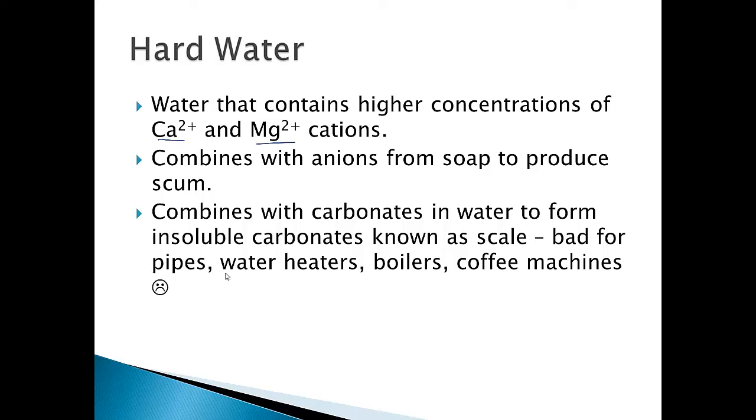It can actually encrust pipes so that the water no longer flows through them very well. They get narrower and narrower as this stuff precipitates. On water heaters they prevent the ability of the heater to work very effectively because it's got to heat up this ceramic stuff that's on the outside now, all this precipitated calcium and magnesium carbonate. That stuff doesn't heat up very well or transfer heat effectively. And in particular it will happen in your coffee machines, which is why you have to clean them every so often.